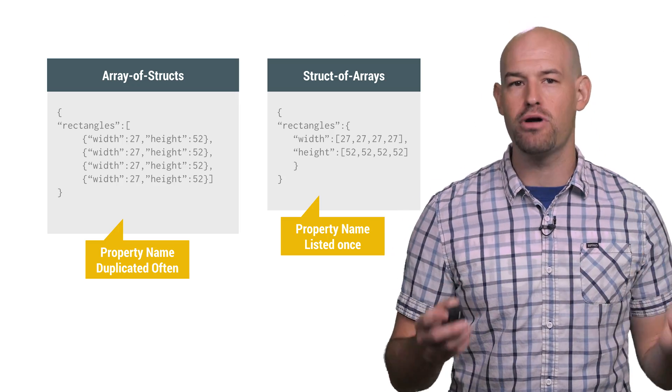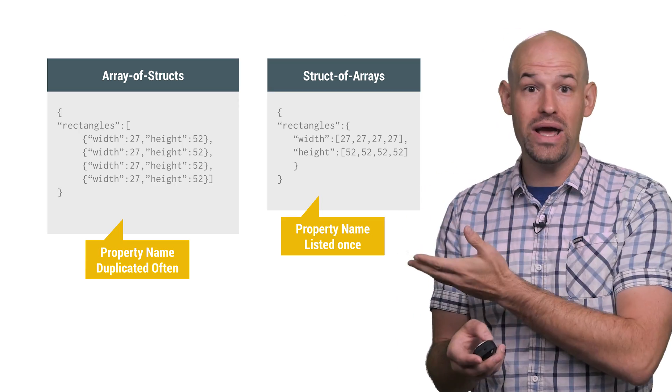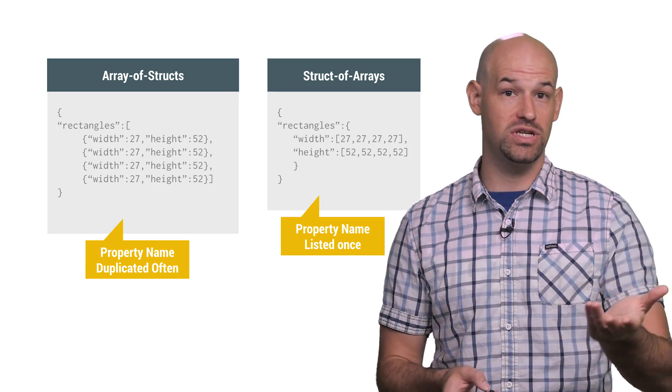First, it removes the redundant property names from the serialized format. Basically, they all get collapsed into a single instance, so already you're going to be producing a smaller serialized file.